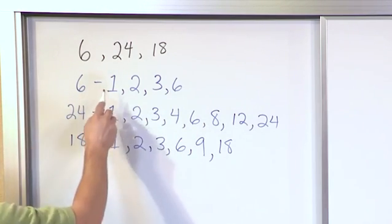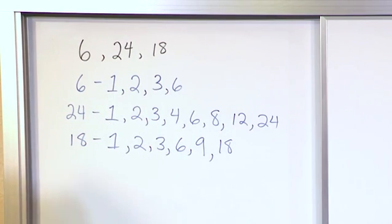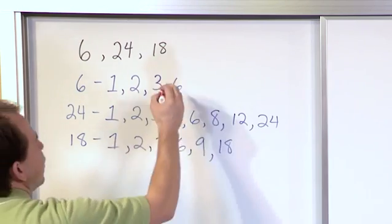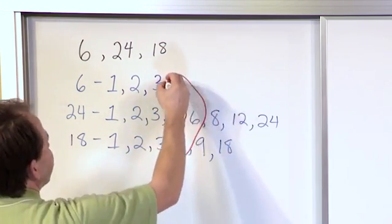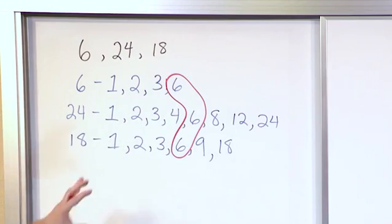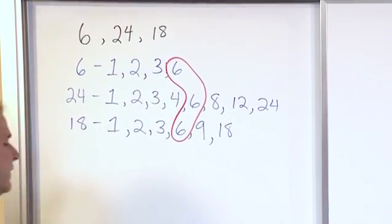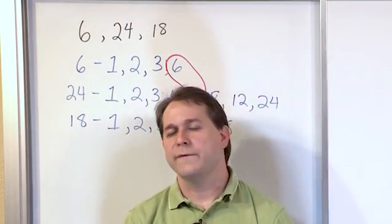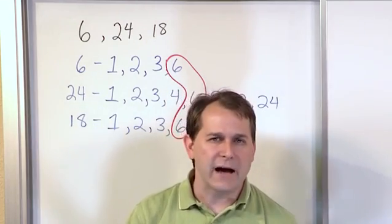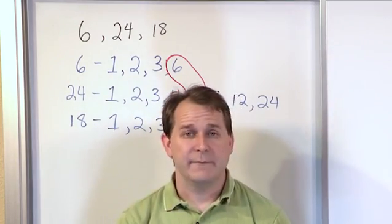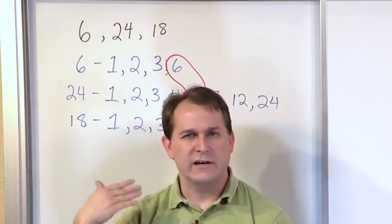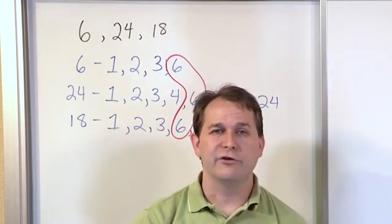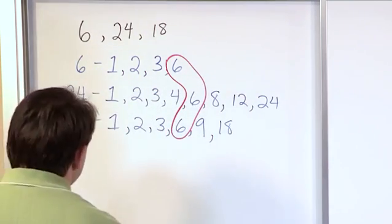We can see right away that 1 is a common factor, 2 is a common factor, and 3 is a common factor. But the greatest common factor is actually 6 because that is the largest factor that's common to all three of these lists. So it doesn't matter if you're finding the greatest common factor between 2 numbers or 3 or 4 or 5 numbers — the procedure is the same. You find all the factors of each number, then circle the largest one that's common.